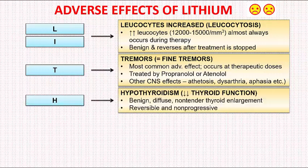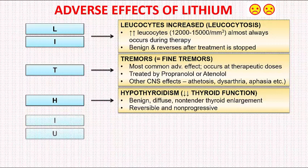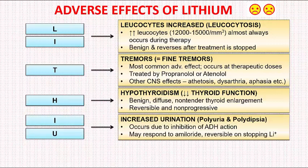H refers to hypothyroidism. Hypothyroidism is reversible and non-progressive, and it manifests as benign, diffuse, non-tender thyroid enlargement. I and U refer to increased urination — that is, polyuria and polydipsia. It occurs due to inhibition of ADH action and may respond to amiloride, and is reversible on stopping Lithium therapy.